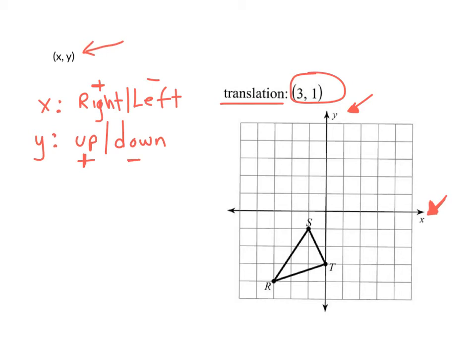So if we go back and look at the problem in front of us, we have an X of 3. It's positive, so that means that we're going to move this right 3. And our Y value is 1, and it's positive, so we're going to move this figure up 1.